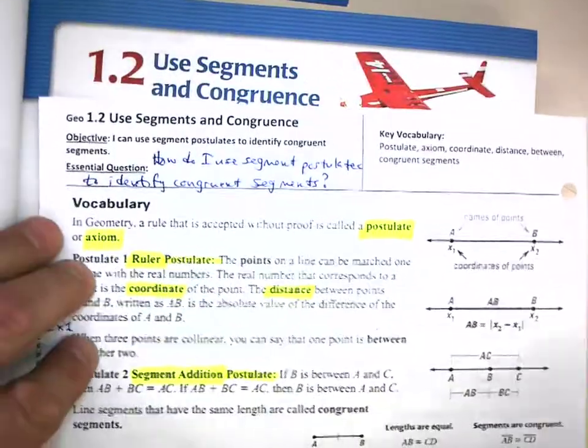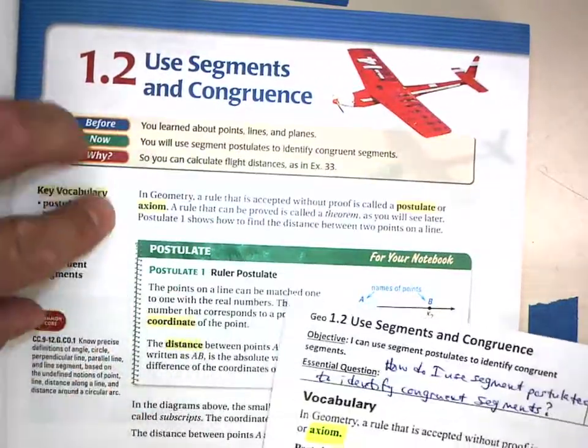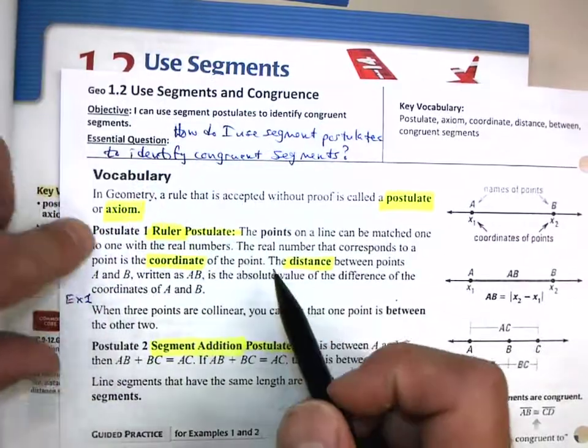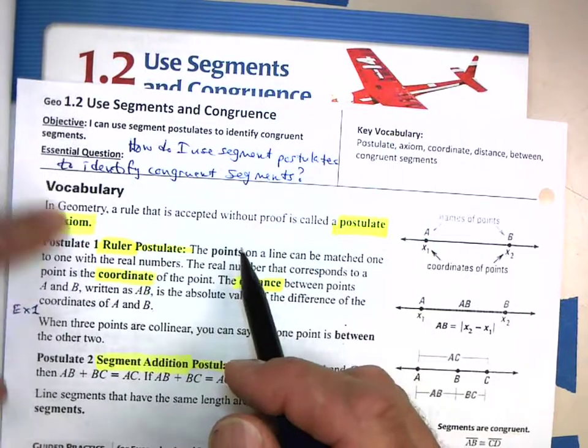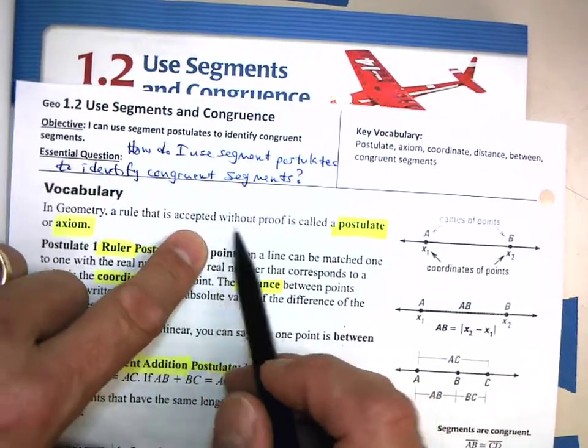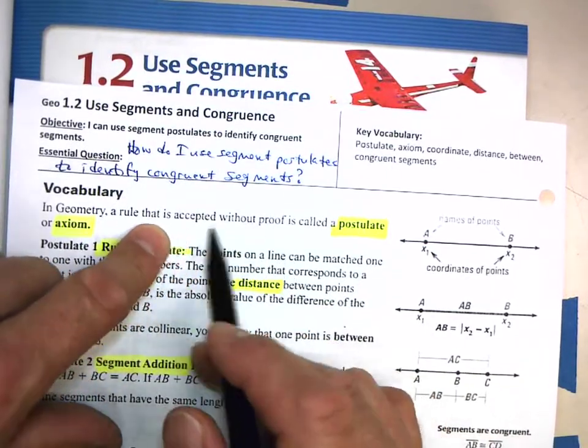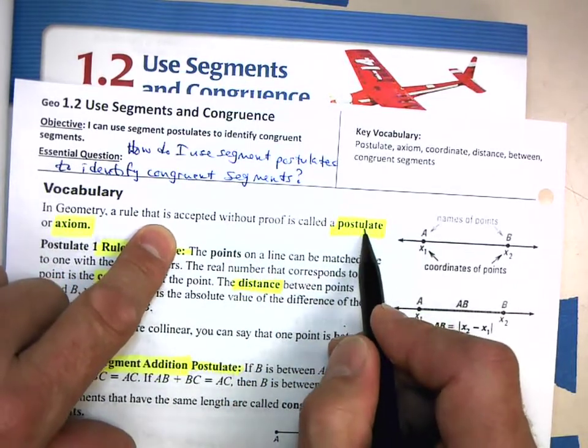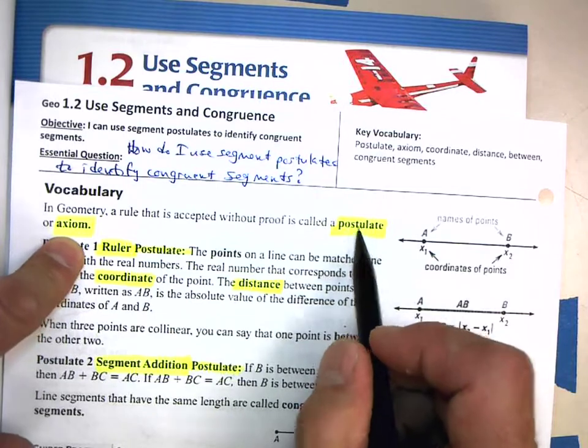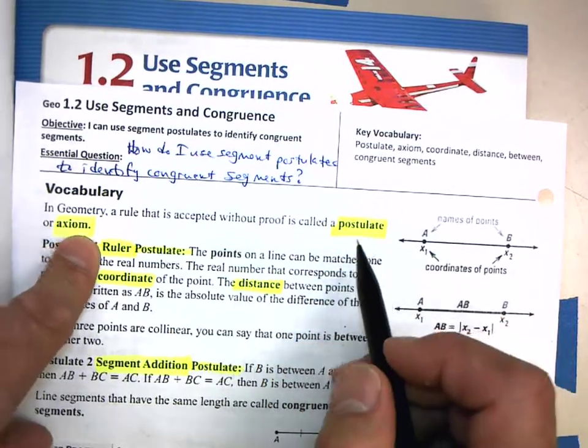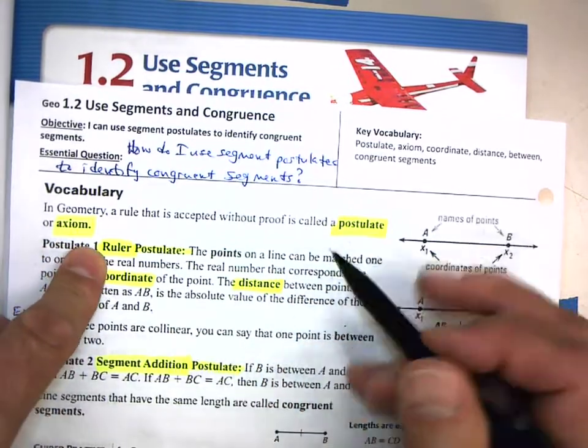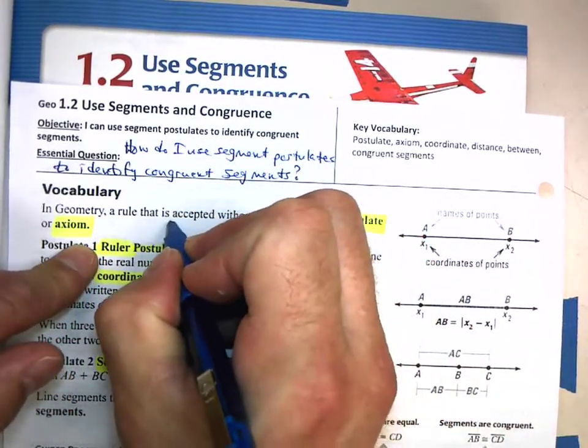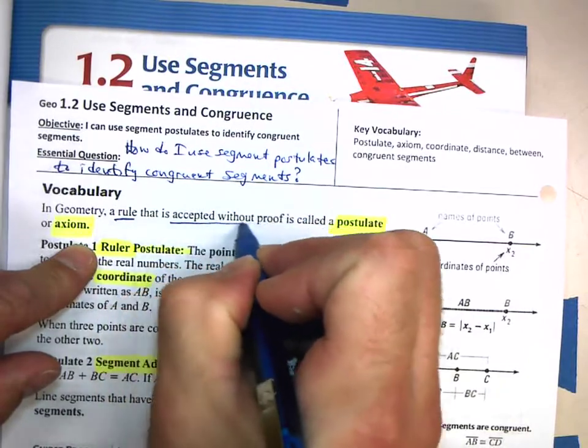In geometry, a rule that is accepted without proof is called a postulate or an axiom. So postulate and axiom are synonyms. They mean the same thing, and what is a postulate? It is a rule that is accepted without proof.